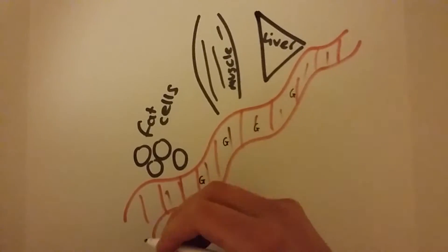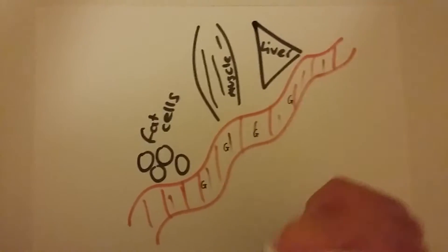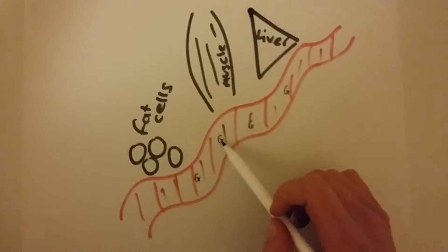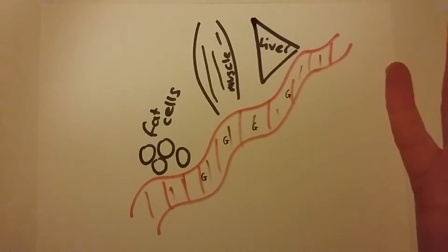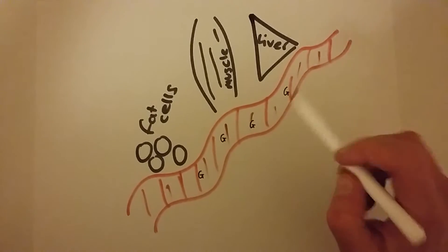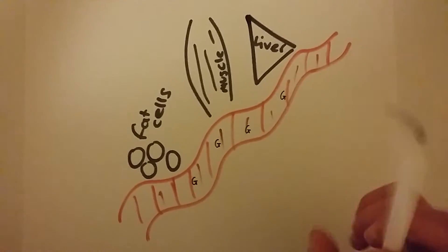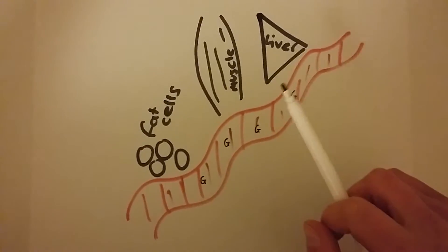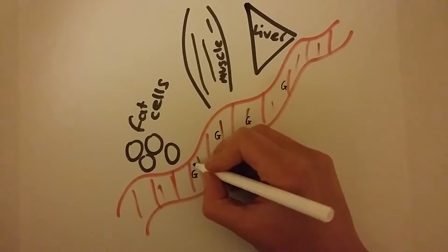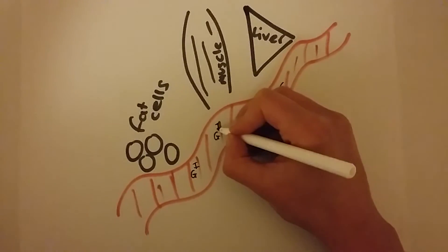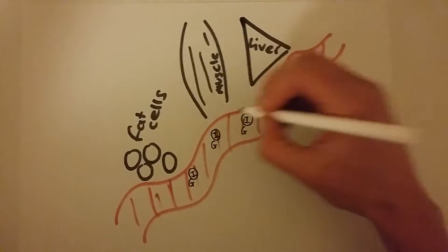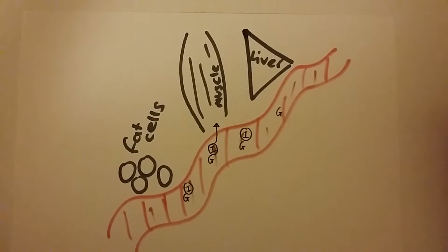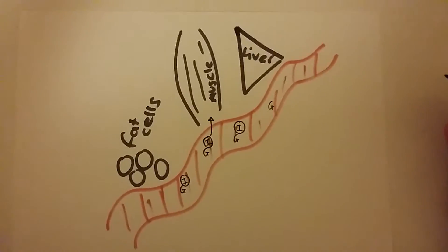Insulin comes along, it's secreted by the pancreas when we have a rise of glucose. We get more and more glucose in our blood and our body recognizes something's not right, I need to secrete some insulin from the pancreas. So it secretes insulin and this insulin floats around for a bit and then opens up the doorway and carries glucose into the cells.